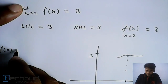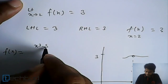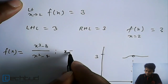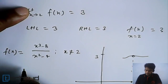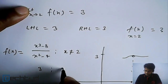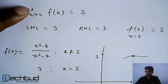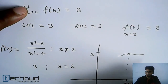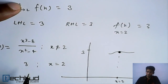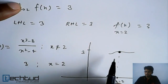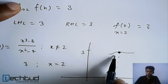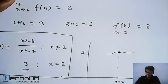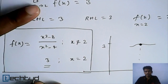We redefine the function as: f(x) = (x³ - 8) / (x² - 4) when x ≠ 2, and f(x) = 3 when x = 2. We are separately defining this function at x = 2 as equal to 3. Now the function becomes continuous because the limit exists and the value equals the value of the function at that point, which we have defined separately. This is the new definition of the function to make it continuous at x = 2.